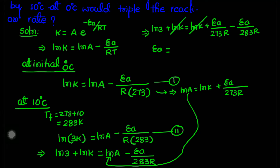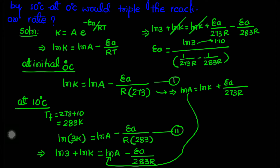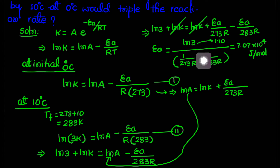Taking the common factor, the activation energy equals Ln3 divided by (1 over 273R minus 1 over 283R). Putting in all values — Ln3 is 1.10 and R is 8.314 — we get the activation energy equal to 7.07 times 10 to the power 4 joule per mole. That is the activation energy we get after solving this problem. So that is the end of this lecture, thank you.